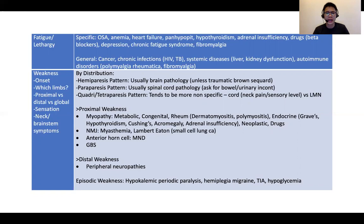To highlight conditions that come up quite frequently: if weakness is episodic, think of hypokalemic periodic paralysis, which may or may not be associated with thyroid disorders. Differentials for periodic paralysis include hemiplegic migraines, TIAs, and hypoglycemia. So we've come to the end of this session — I hope you found it useful.